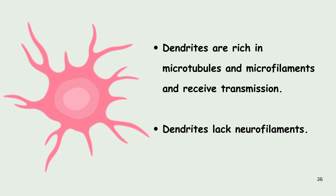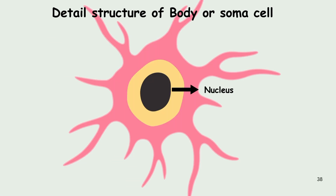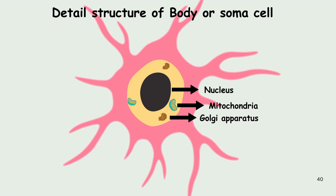Now let us see the detailed structure of the cell body or the soma cell. The soma cell of the neuron contains all the essential cell organelles to support the normal function of the cells. The main cell organelles of the soma cells are the nucleus, mitochondria, Golgi apparatus, lysosomes and cytoplasm.